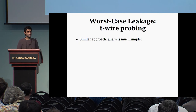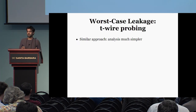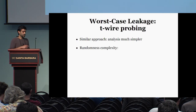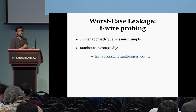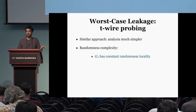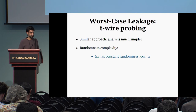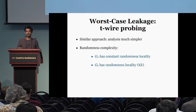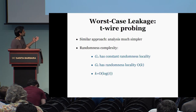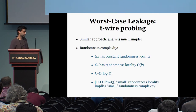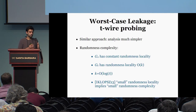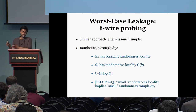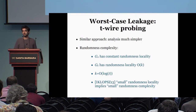For worst-case leakage, we do something similar — in fact, the same approach works even for the worst-case leakage setting, and the analysis is significantly simpler. To show the randomness complexity result, we observe that the base gadget has constant randomness locality, and in every step this randomness locality increases only slightly, so after k steps the randomness locality is some constant times k. Setting k to be logarithmic in T and using a previous result, we convert this into a leakage-resilient circuit compiler with small randomness complexity.